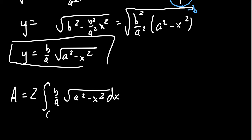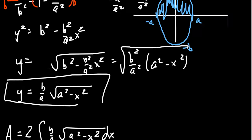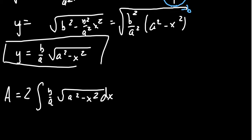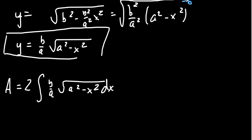We have to think about what the bounds are going to be. If we're not certain, we can look at the picture again. The bounds will be from negative a to positive a, where the cross sections come all the way over.